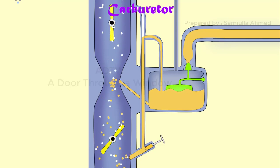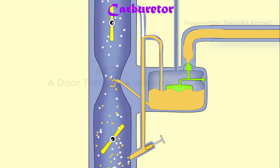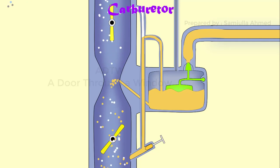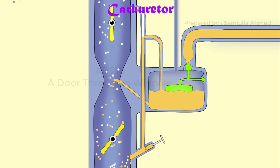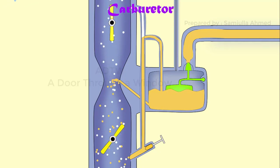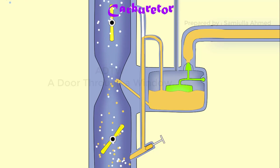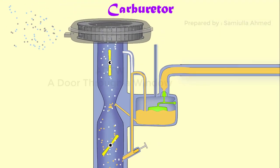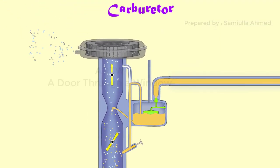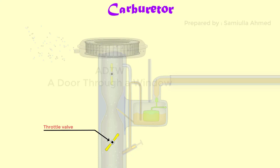The gasoline engine is quantity governed, which means that when power output is to be varied at a particular speed, the amount of charge delivered to the engine cylinder is varied. This is achieved by means of a throttle valve, usually of butterfly type, which is situated after the venturi tube.